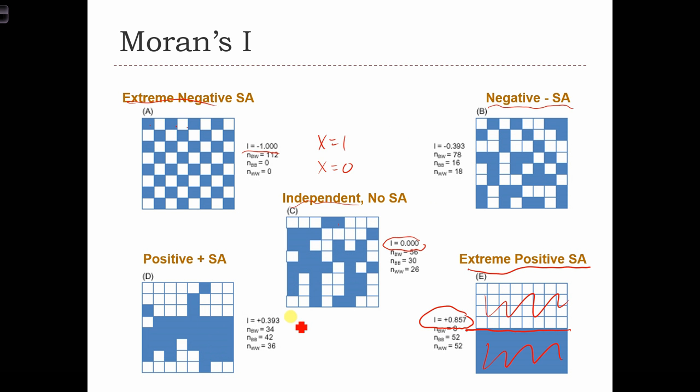And again, it's not perfectly split like it is in this extreme case, but we definitely see more evidence of clustering of high values and low values than we do in this random case over here. So this is more or less the spectrum of what different map patterns will look like under different levels of spatial autocorrelation.